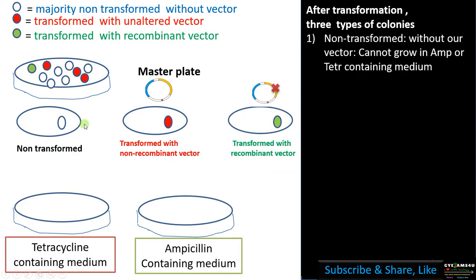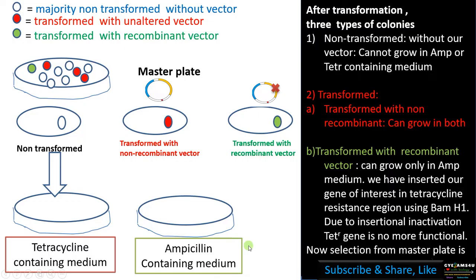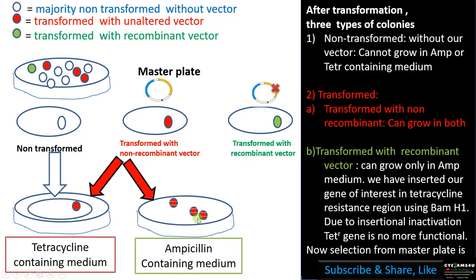Non-transformed colonies, lacking the antibiotic resistance genes, cannot grow on tetracycline or ampicillin containing medium and can be easily removed. Transformed with non-recombinant vector colonies can grow in both tetracycline and ampicillin containing medium, since the gene of interest is not inserted and both resistance genes remain functional.